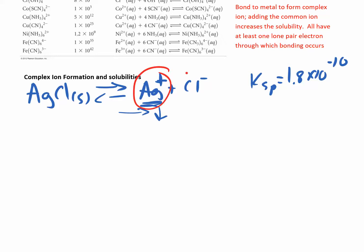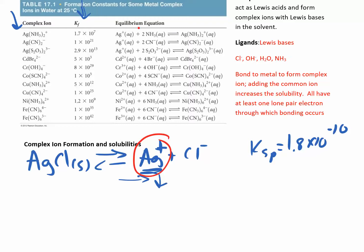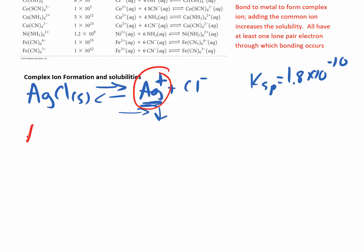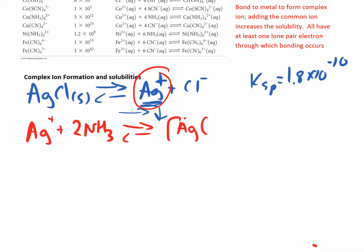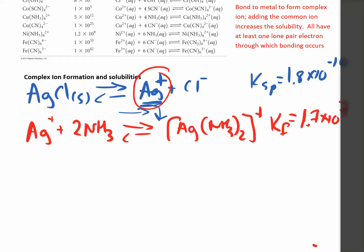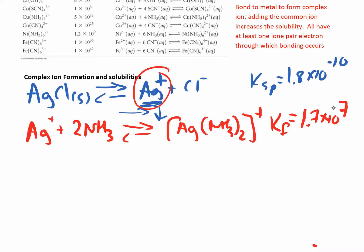Looking at the table, several ligands can form complex ions with silver. Let's use ammonia. Ag+ combined with two NH₃ molecules forms the complex ion [Ag(NH₃)₂]+. This complex has a Kf of 1.7 × 10⁷. By adding the two reactions together — the Ksp reaction and the Kf reaction — and multiplying their constants, we get a new combined K.